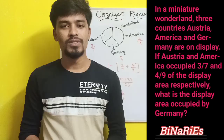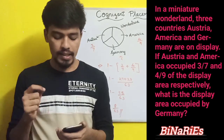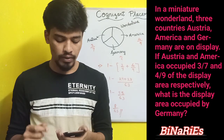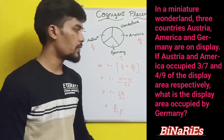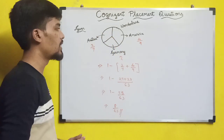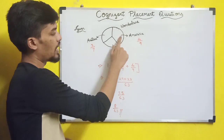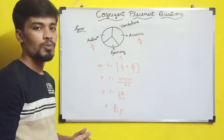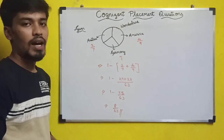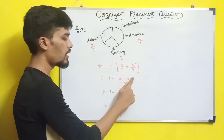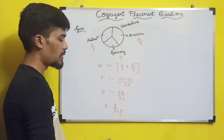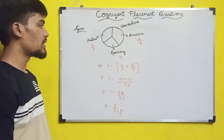Next question: in a miniature wonderland, Austria, America, and Germany are on display. Austria occupies 3/7 and America occupies 4/9 of the display area. What area does Germany occupy? Taking the total area as 1, Germany's area = 1 − (3/7 + 4/9). Cross-multiplying gives 55/63, so Germany occupies 1 − 55/63 = 8/63 of the display area.